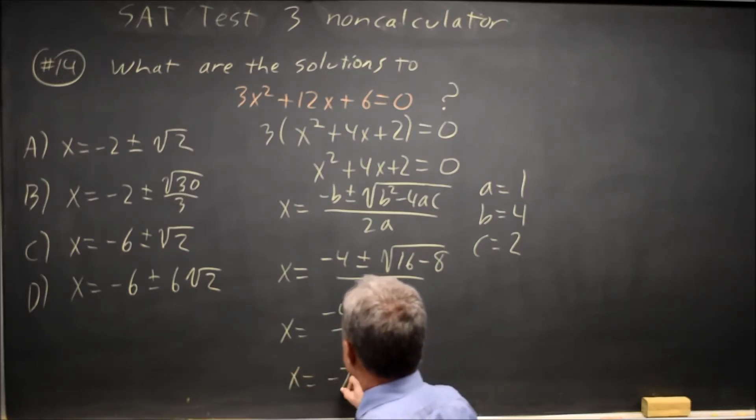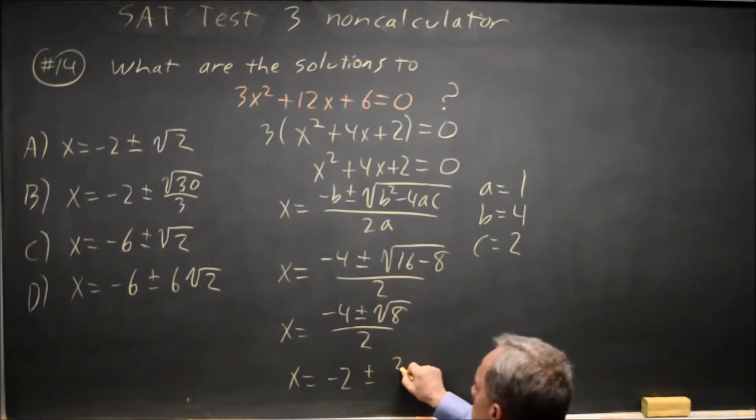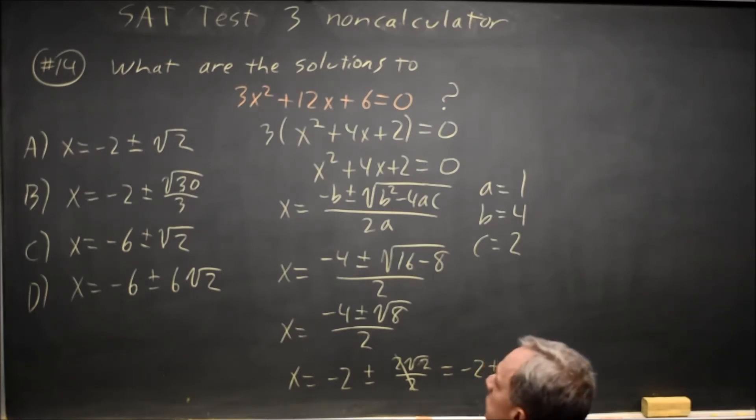That's negative 4 over 2, which is negative 2, plus or minus root 8 over 2. Root 8 is 2 root 2, and that's over 2, 2 over 2 is 1, so that's negative 2 plus or minus root 2.